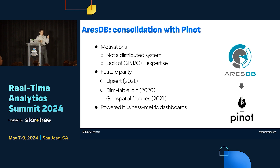There were several feature parities we had to achieve, including upsert functions, dim table join — where a small table can be stored on one machine — and some geospatial features to support our use cases. The team made those contributions to Apache Pinot, and over the year we achieved feature parity and then sunset this technology.